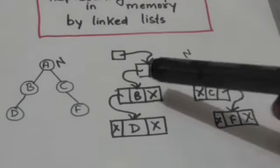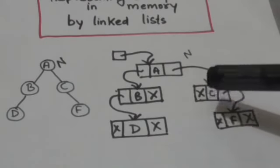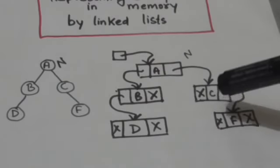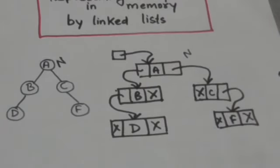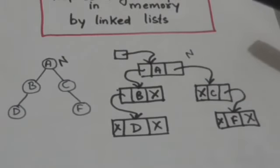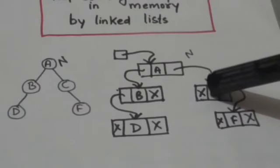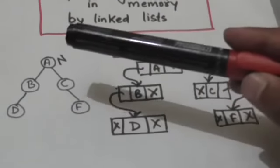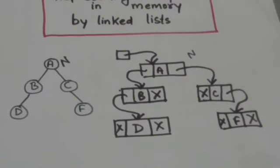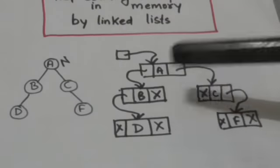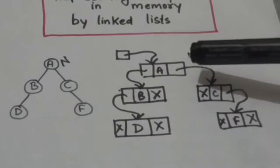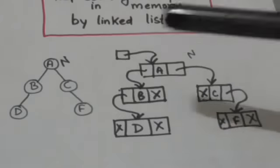If node n doesn't have any left successor, then this part of the node will contain null value. One part will contain the location of the node of the linked list which corresponds to the right successor of node n of the binary tree. If node n doesn't have a right successor, then this part of the node will also contain null value.